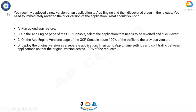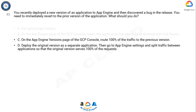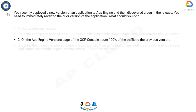Explanation: Option C is correct. Option A is wrong as gcloud app restore was used for backup and restore and has been deprecated. Option B is wrong as there is no application revert functionality available. Option D is wrong as App Engine maintains versions and need not be redeployed.